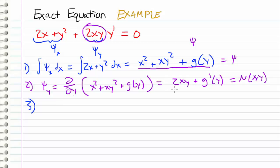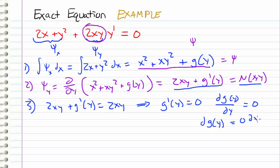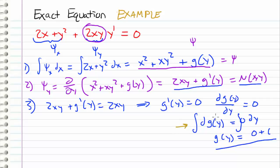In the third step, we take our result from step 2 and set it equal to our function N — another expression for psi sub y. So we get 2xy plus g prime of y equals N(x,y), which is 2xy. Solving for g prime, we get g prime of y equals zero. Rewriting this as dg(y)/dy equals zero, we have a separable differential equation. Integrating both sides, g(y) equals a constant. We've found our unknown function g(y) — in this case it's just a constant, though that isn't always the case.